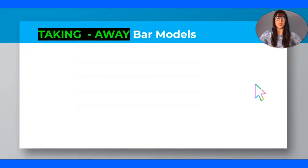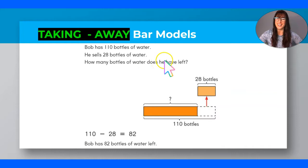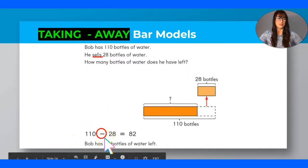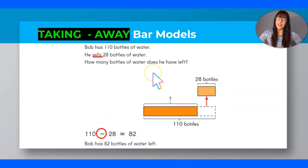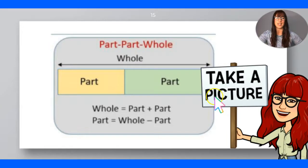The last type is the taking-away bar model, which we learned in second grade and continue in third grade. For example: Bob has 110 bottles of water and sells 28 bottles of water — how many bottles of water does he have left? When you sell something, you've given it away, so you'll have less. The word 'left' tells you that you're definitely going to use subtraction. Your bar model is drawn with an arrow going out because you are taking away that amount, and the remaining part has a question mark. Part is unknown, so I am doing subtraction. Please take a picture of this in your mind and put it into practice with any real world problem.